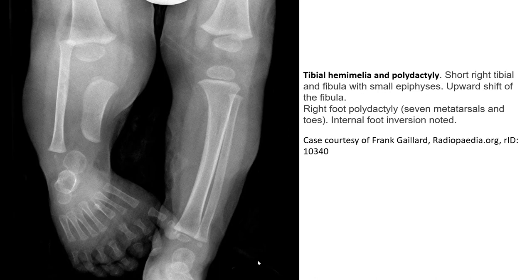And this is the case of GPL hemimelia with polydactyly. There is shortening of the GPL and fibula with small epiphysis, upward-shaped fibula, associated polydactyly, and internal foot inversion noted.